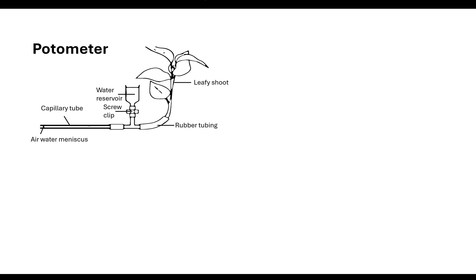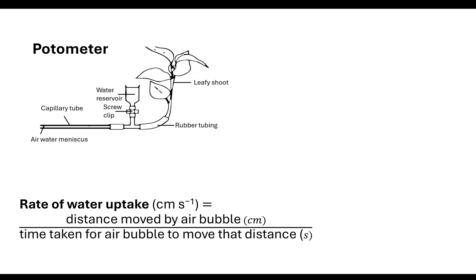When doing a potometer investigation, consider your independent variable, dependent variable, control variables, and repeats. There is a water reservoir with a screw clip — once you've done one run, you turn the screw clip to push water back into the capillary tube and return the air-water meniscus to its original position for a repeat. The potometer measures the rate of water uptake: the distance moved by the air bubble divided by the time taken for it to move that distance.